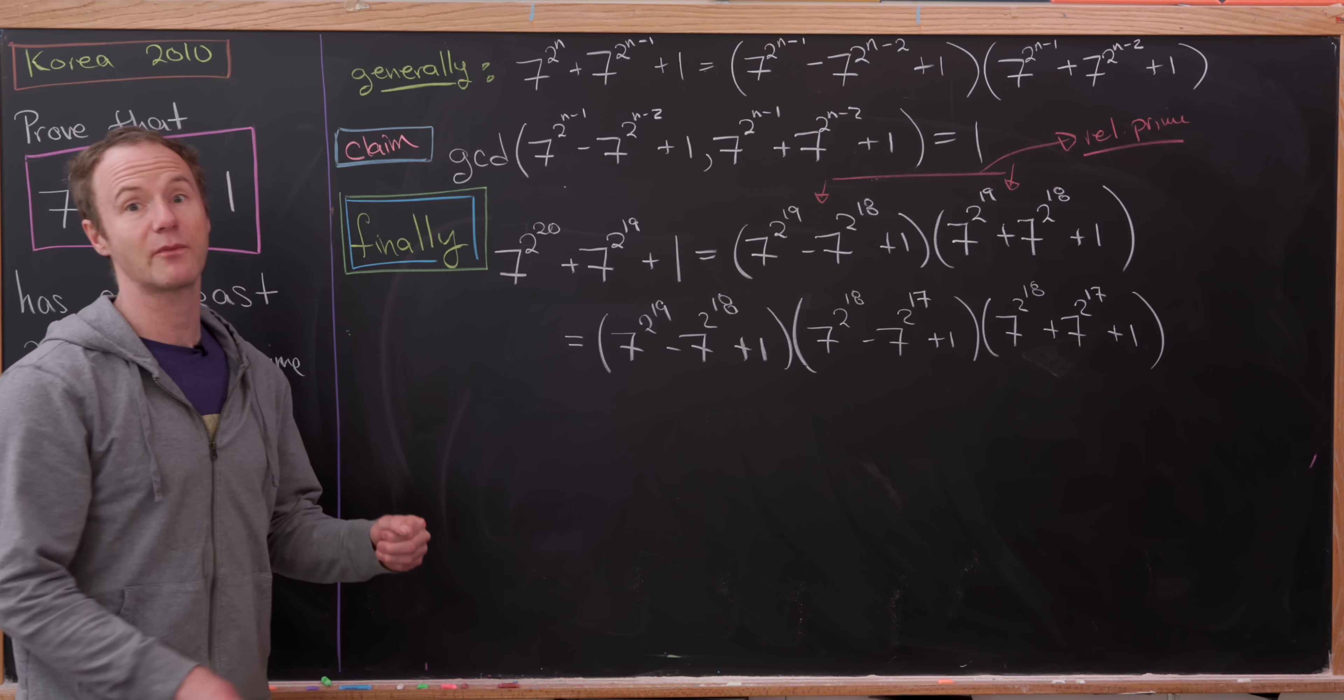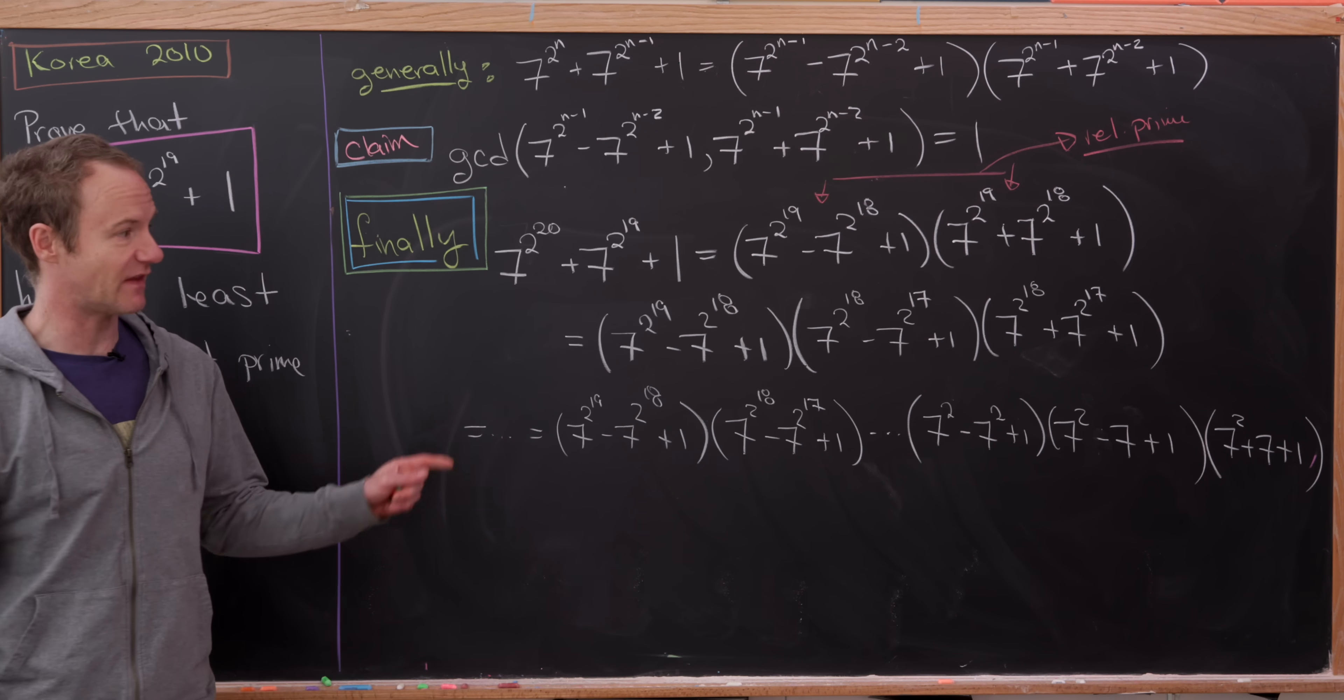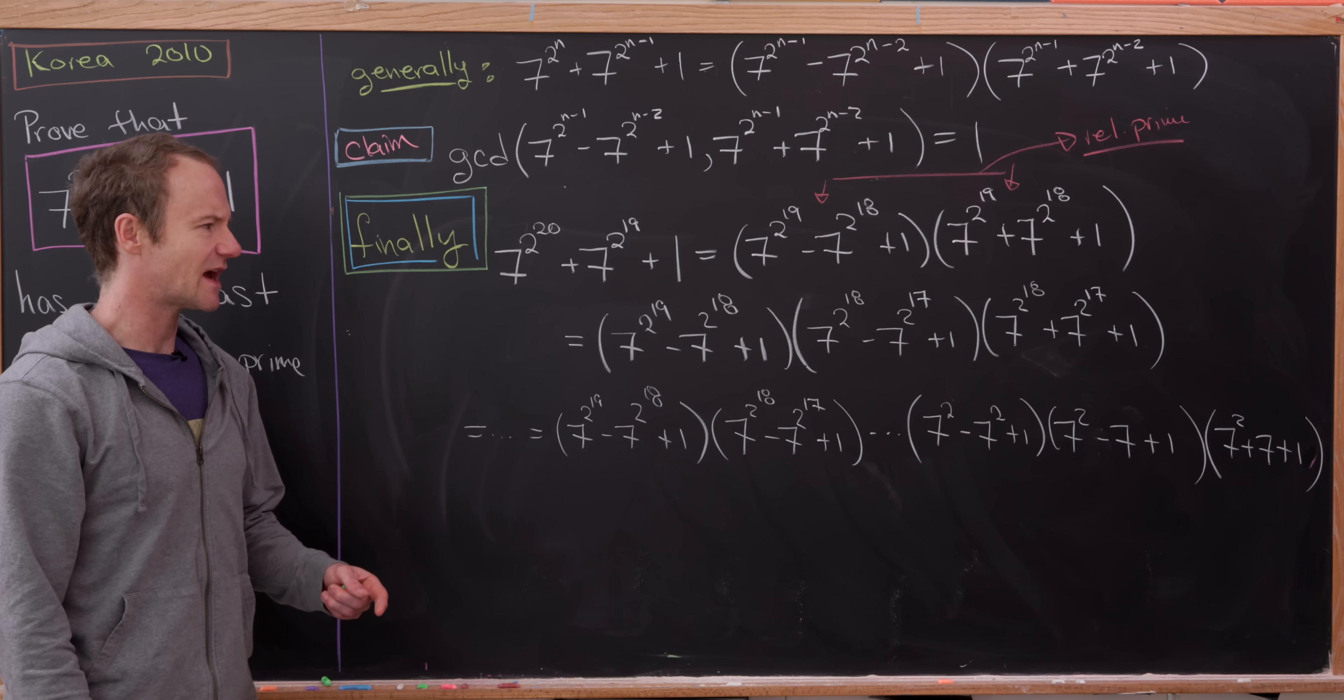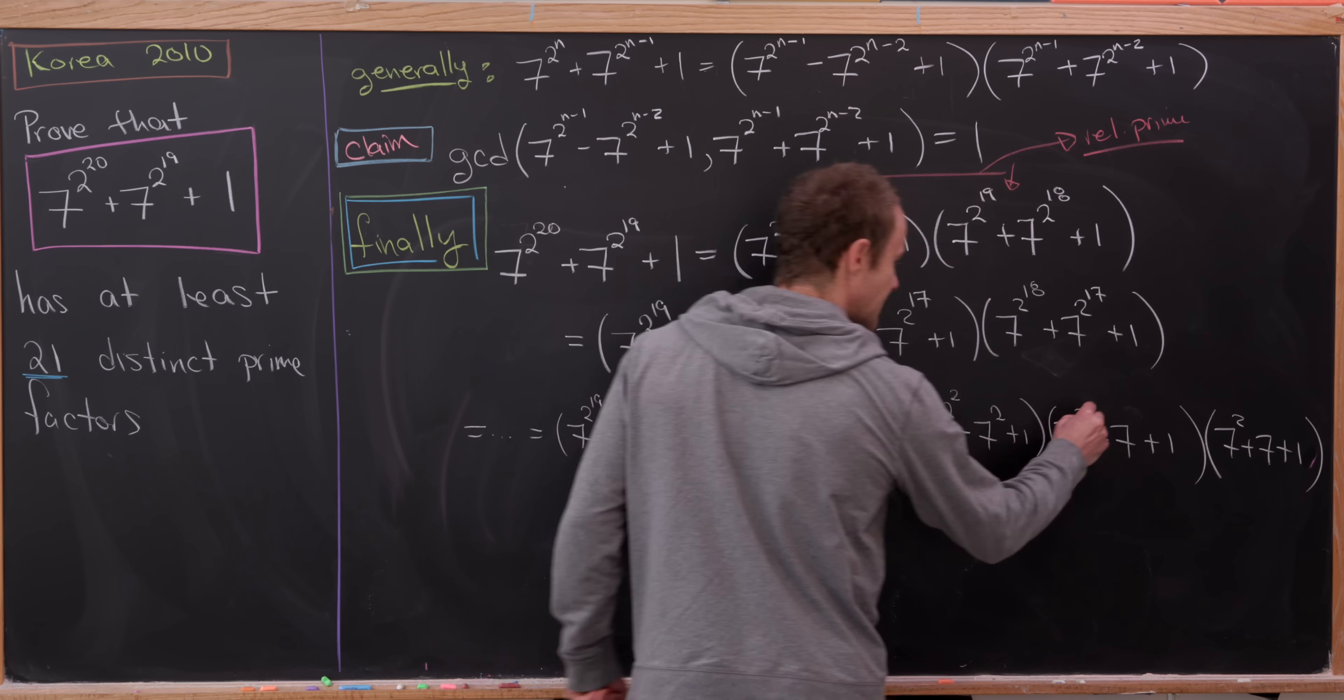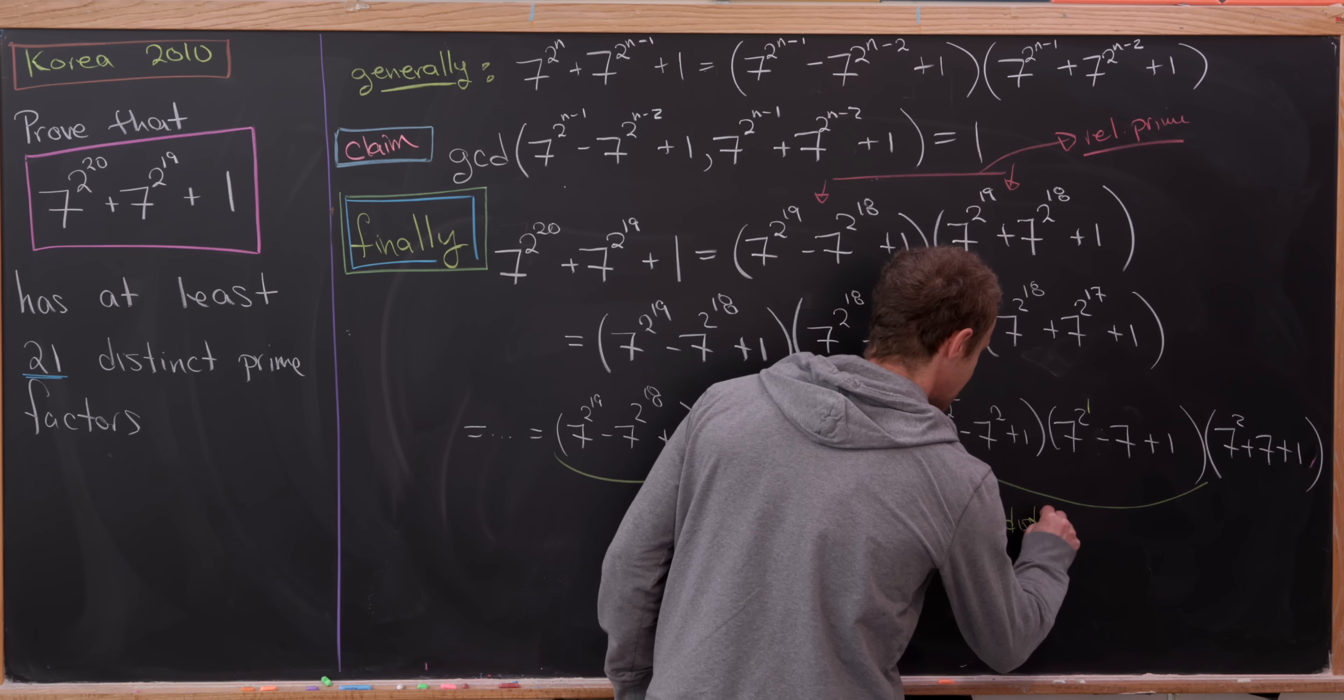And now we can keep going and we'll end up with the following final factorization. So there we have it. We just extended that factorization all the way down. Notice it starts up here at 7 to the 2 to the 19 minus 7 to the 2 to the 18 plus 1. And it ends, the last term with subtraction is 7 squared minus 7 plus 1. And then we have one additional term, 7 squared plus 7 plus 1. And then by repeated applications of our claim, we know that all of these are relatively prime. But let's see, how many total terms do we have here? Well, I missed a squared here. So I'll put that back in. And we can do it by counting the exponent on the power of 2 right here. So notice way down here we're starting with a 2 to the 1. And then here we have a 2 to the 2. Next will be a 2 cubed all the way up to 2 to the 19. So these terms here account for 19 total terms. But those 19 terms will give us 19 distinct prime factors.